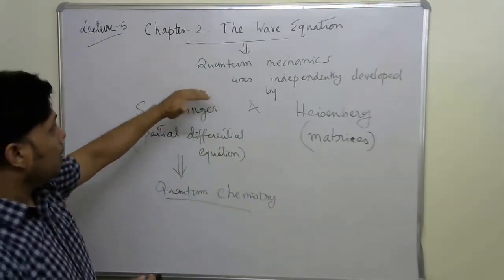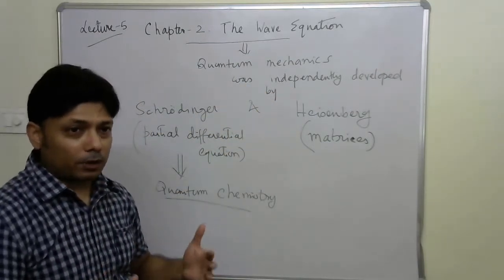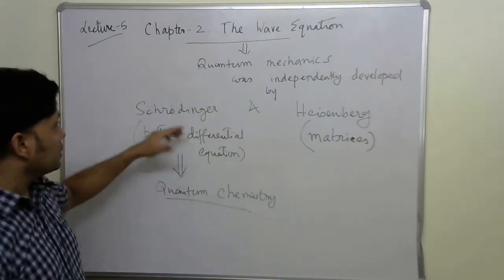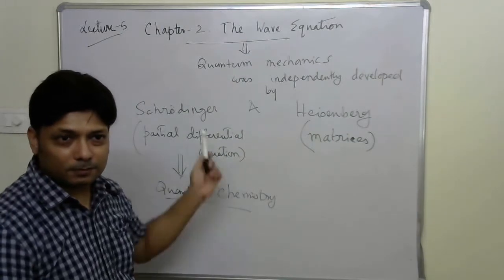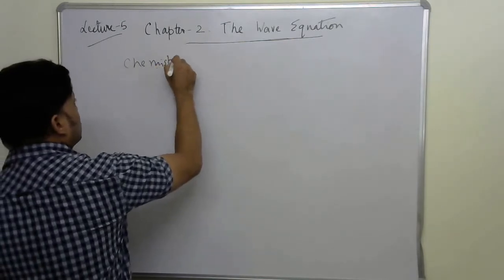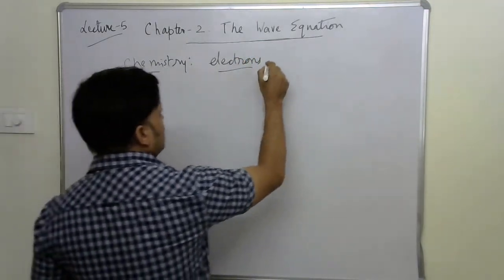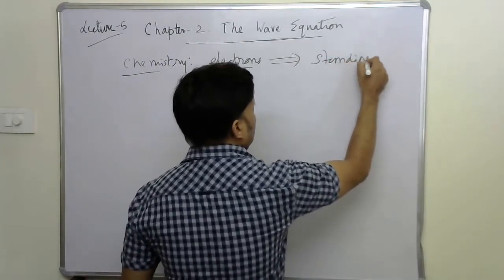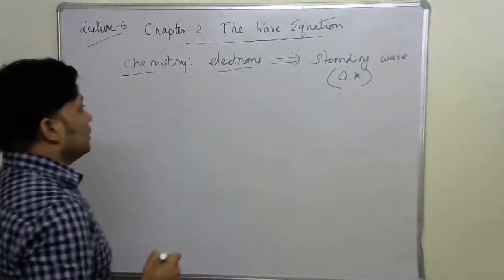Let me explain why this chapter is termed the 'wave equation' chapter. The question is: do we actually start studying Schrödinger's equation in this chapter? Learning chemistry is all about learning the properties of electrons. Under quantum mechanics, electrons behave as standing waves according to modern physics.